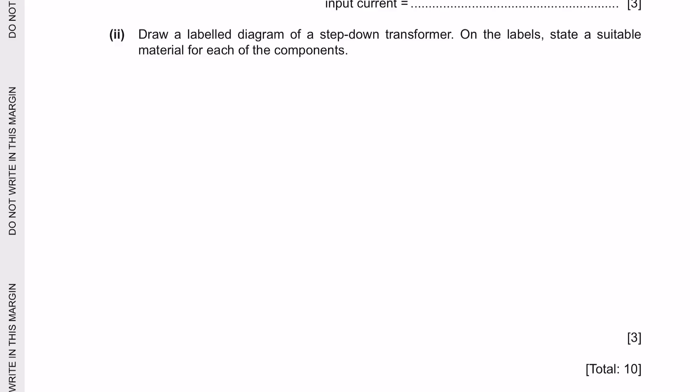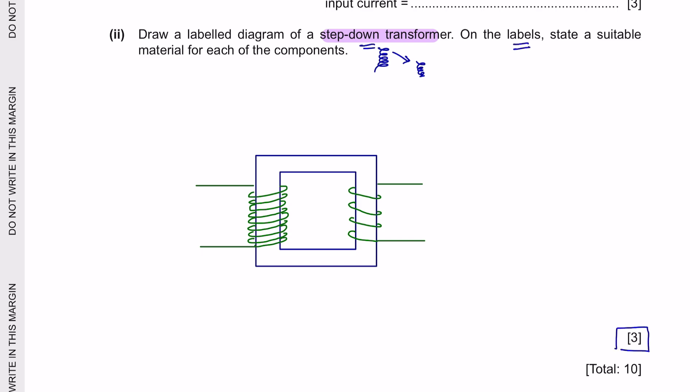Next question part 2. Draw a labeled diagram of a step-down transformer. On the label state a suitable material for each of the components. So a step-down transformer means that you will have a more number of coil at the primary and lesser number of coil in the secondary. We will not get a complete three marks if we do like this because you are asked to also label the diagram. The material used would be soft iron core. The coils would be made of copper. And lastly, don't forget to label the primary coil and the secondary coil.